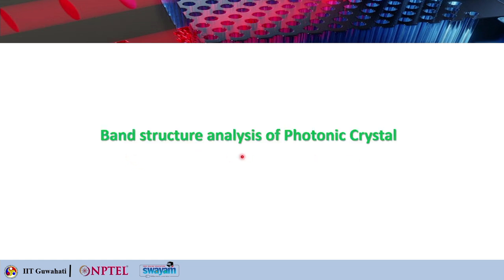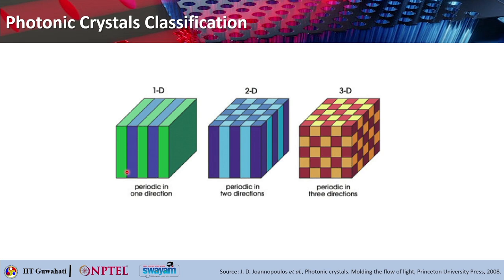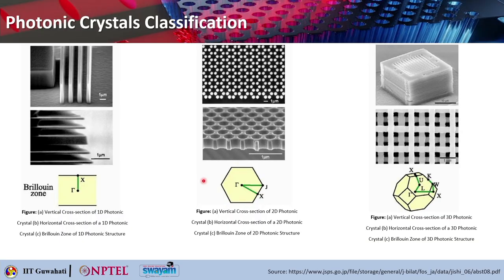Here you can see the image of 1D, 2D and 3D photonic crystals. These are basically periodic arrangements of dielectric objects. One important thing to remember is that the lattice constant is comparable to the wavelength of light. Photonic crystals are new artificially created materials in which the refractive index is modulated periodically at a scale of the order of the wavelength of light of operation.